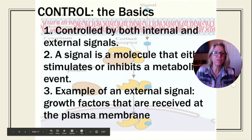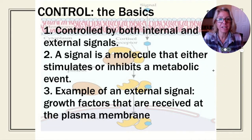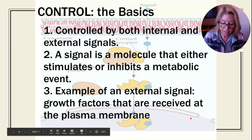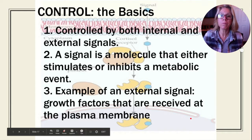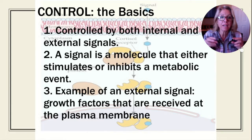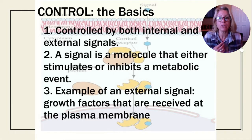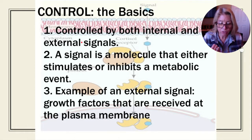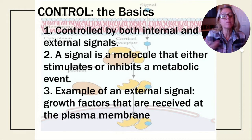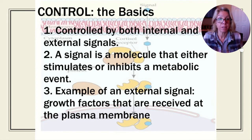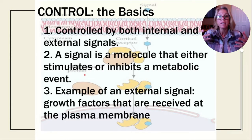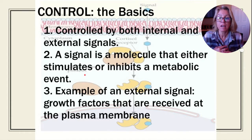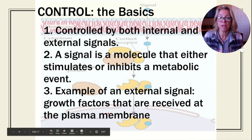How is all of this controlled? It's controlled by both internal and external signals. An external signal would be like a growth factor. An internal signal could be DNA damage — something went wrong in mitosis. A signal is a molecule that either stimulates or inhibits some sort of metabolic event.